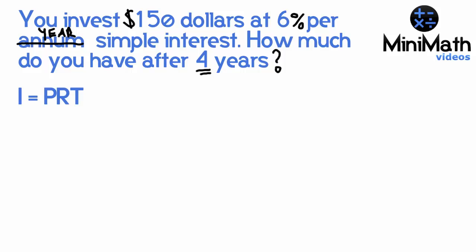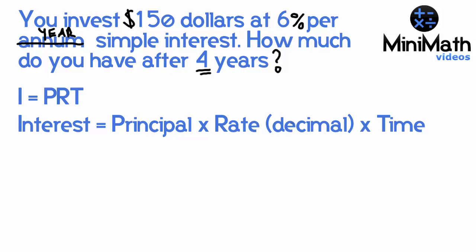What's the formula for simple interest? It is I equals PRT, where it's interest equals principle times rate in a decimal times time.